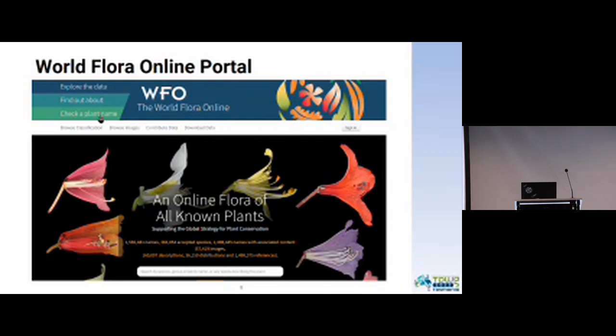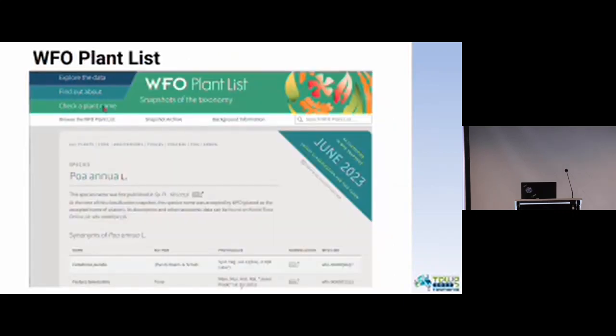It has three parts: explore the data, check your plant name, and find out about — which is basically information about the project. If you click 'check a plant name,' it will take you to the WFO Plant List, which is the backbone classification for the World Flora Online.